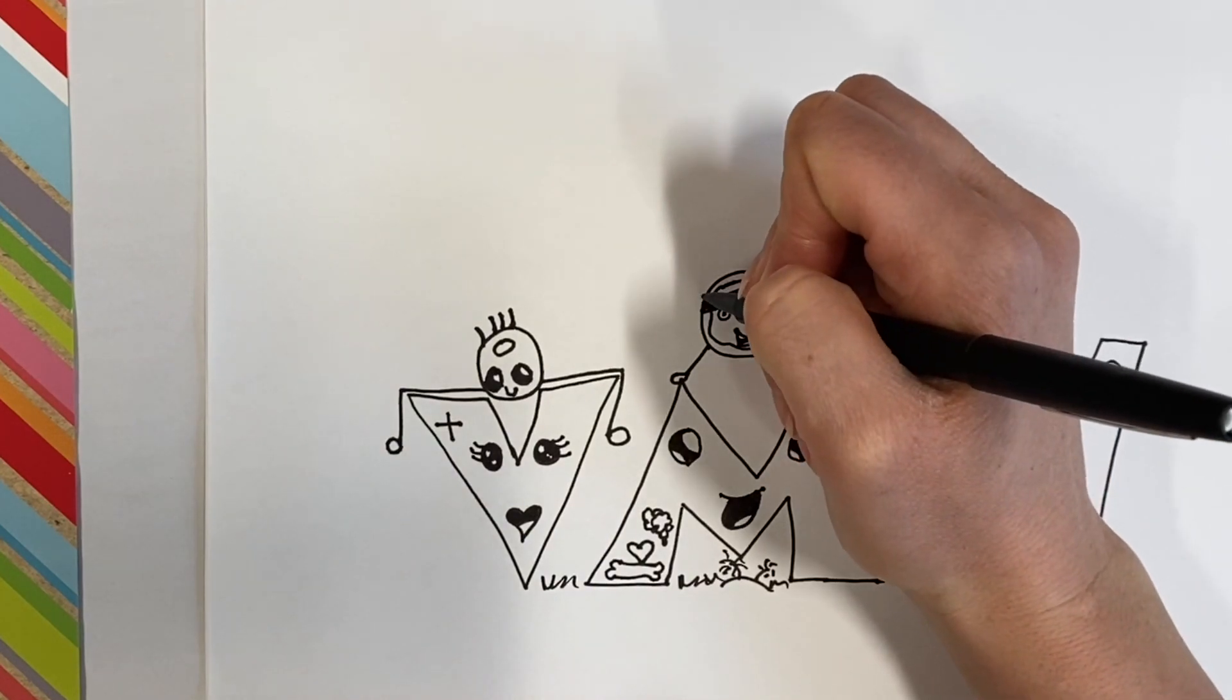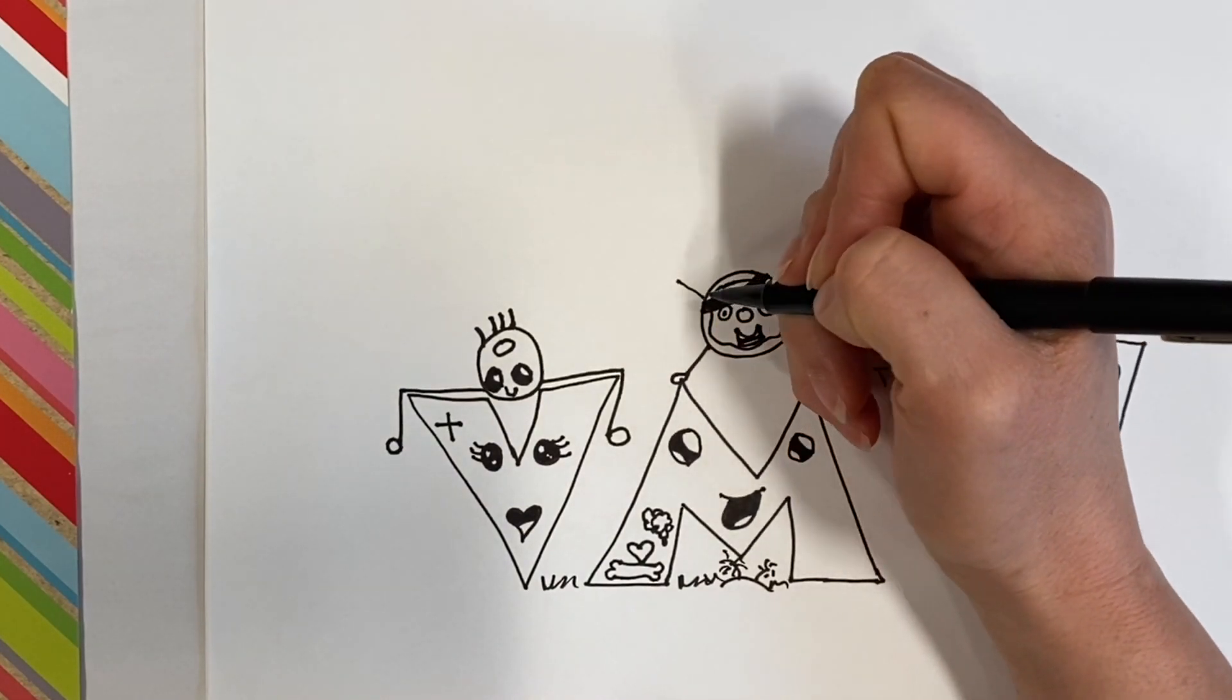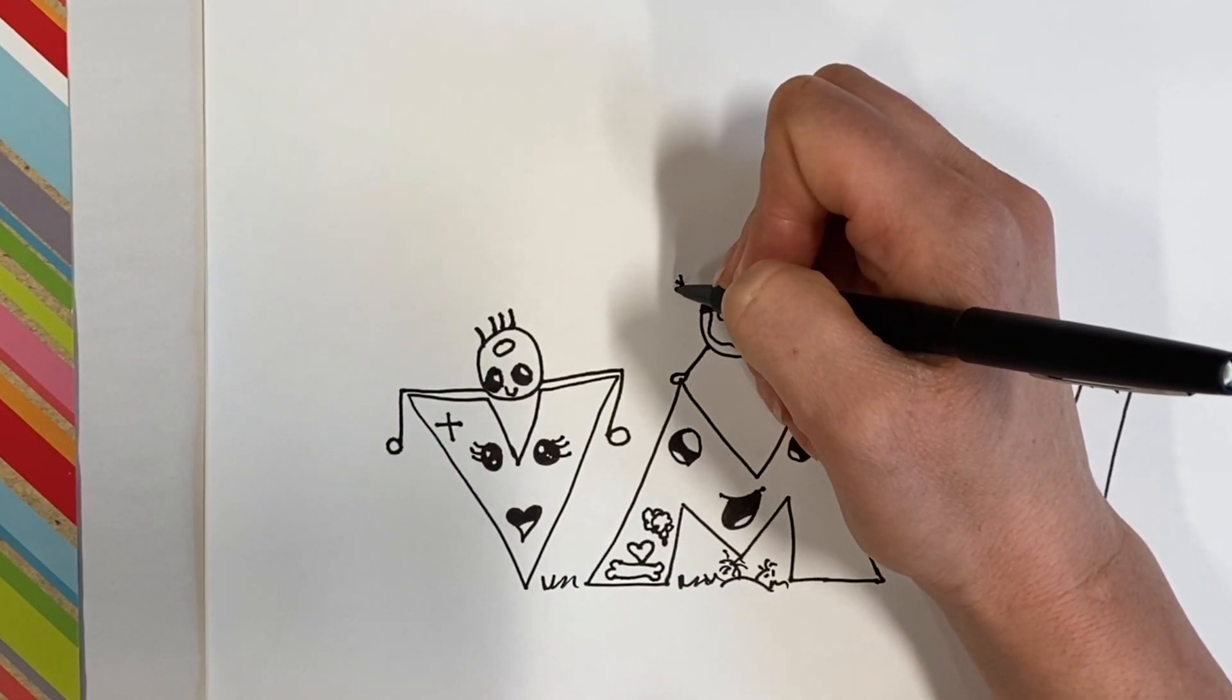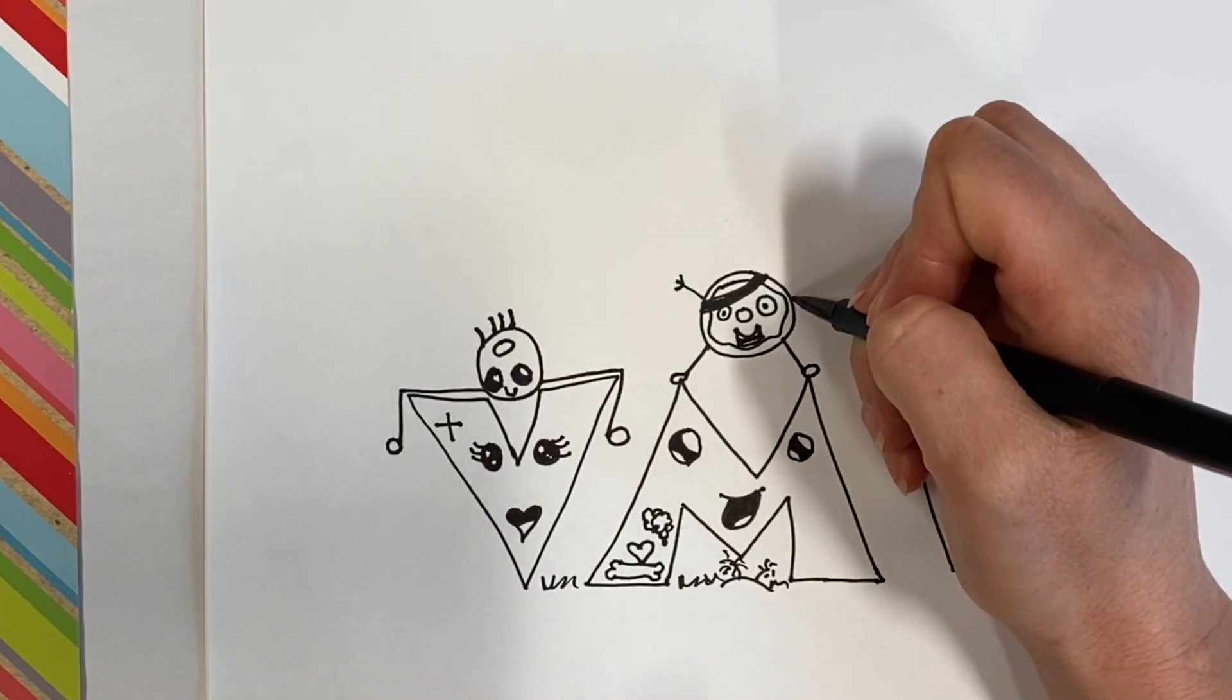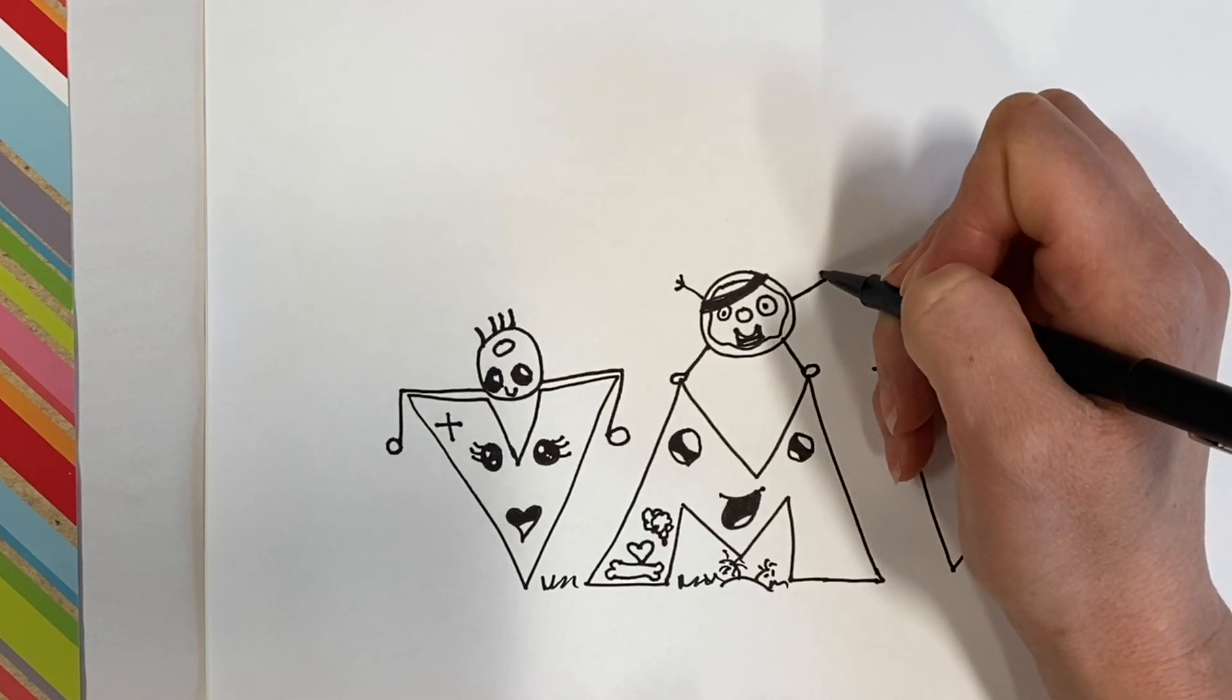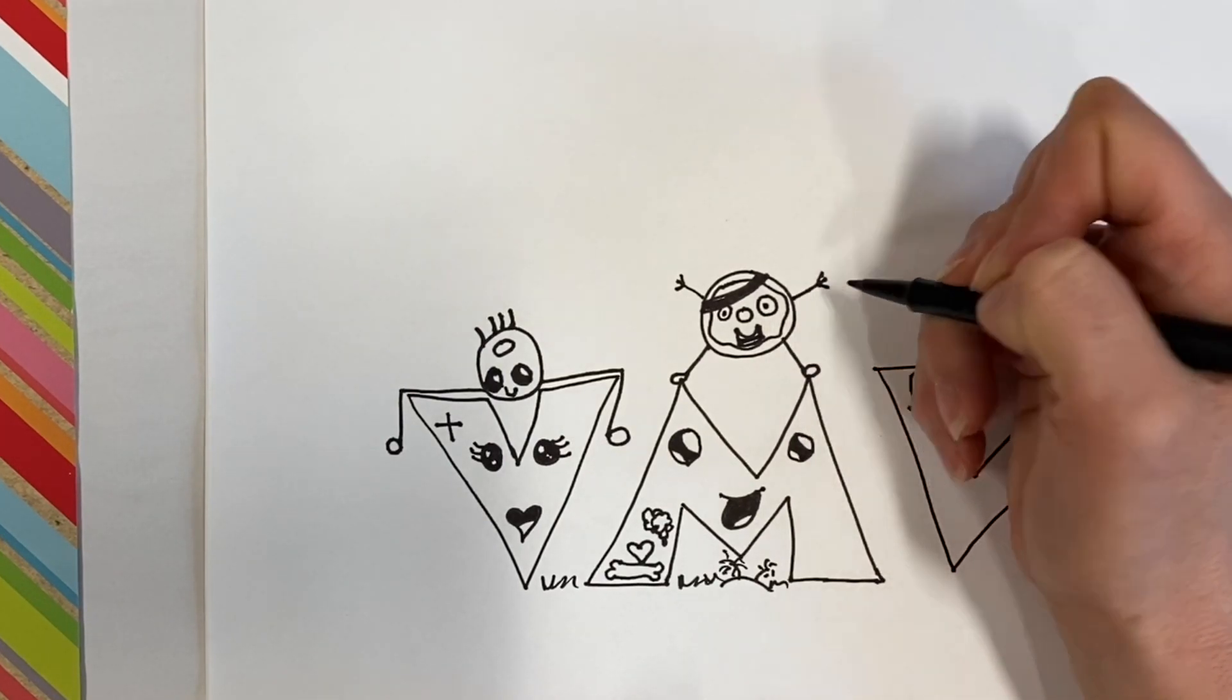Starches are also a complex carbohydrate. That's what this bagel is. Found in bread, pastas, cereals. Also can be found in vegetables. You hear starchy vegetables like potatoes, peas, corn.